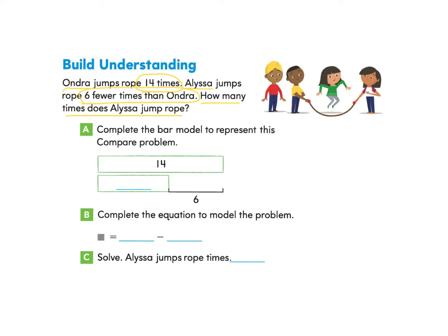To complete the bar model, we are going to start at the number 6 and count on to 14. So we have 6 and then count 7, 8, 9, 10, 11, 12, 13, 14 — and that's where we stop. We have a difference of 8, so we will write in 8.